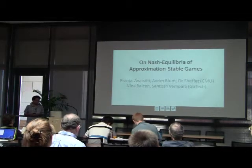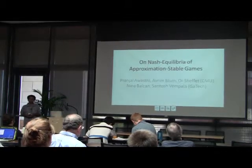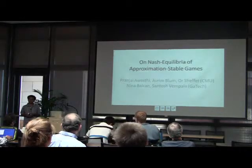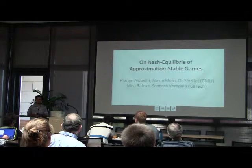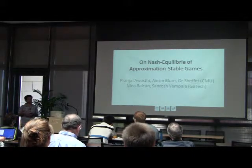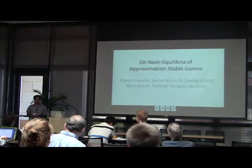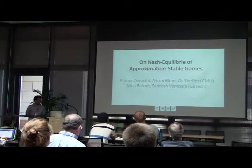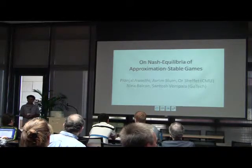This talk is going to be along similar lines to what Avram talked about yesterday, which was on how to get around hardness barriers by making some natural assumptions — assumptions which may be implicitly what one would have made anyway in order for the solution to be useful or meaningful. Avram talked about an application to clustering, and in this work we have tried to apply a similar idea to problems in computing approximate Nash equilibria. The situation is much less clear here, so there are a lot of good open problems.